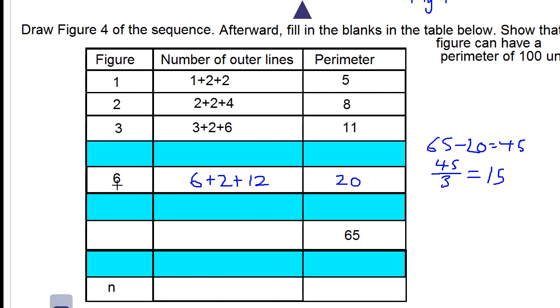So the difference between the six row and the row with sixty-five is fifteen. So fifteen plus six is twenty-one, which comes here, and if the first number of the sum is always the number of the figure, we start with the number of the figure, which is twenty-one, plus the second number is always two, and the third number is the number of the figure multiplied by two.